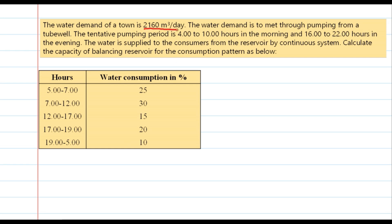The water demand of a town is 2160 m³ per day. The water demand is to be met through pumping from a source. The tentative pumping period is 4 to 10 hours in the morning and 16 to 22 hours in the evening. The pumping period is given as 4 to 10 and 16 to 22.